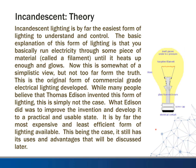It is by far the most expensive and least efficient form of lighting available. This being the case, it still has its uses and advantages. This is a basic picture of what this looks like — you have a filament, many times a tungsten filament, a glass enclosure, and it's usually filled with some type of inert gas under low pressure.